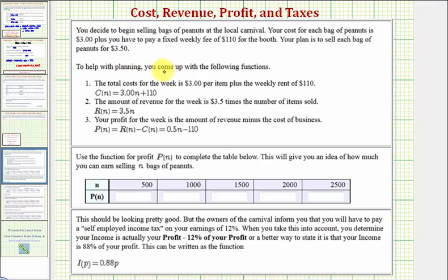In this problem, you're given a situation about selling peanuts, and you've already determined the cost function C of N, the revenue function R of N, and the profit function P of N. Remember, the profit function P of N equals the revenue function R of N minus the cost function C of N.